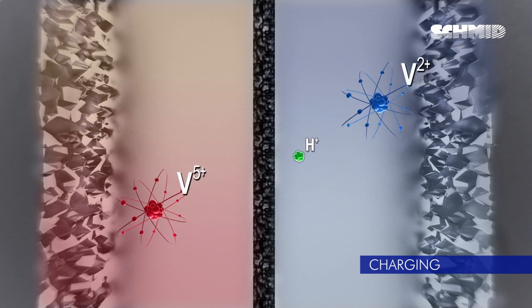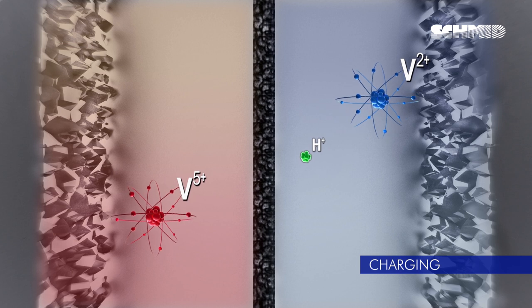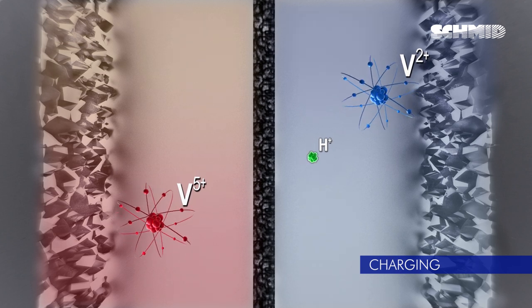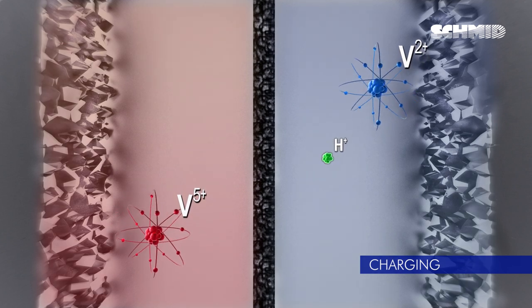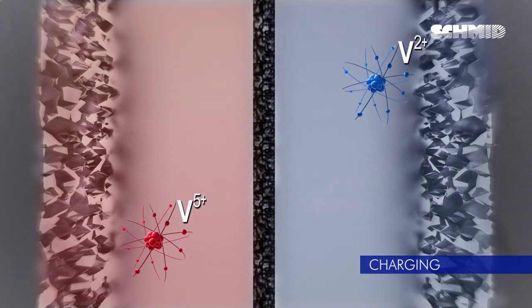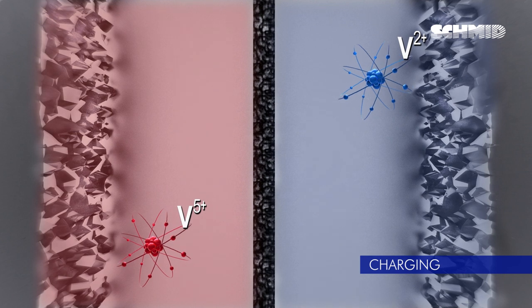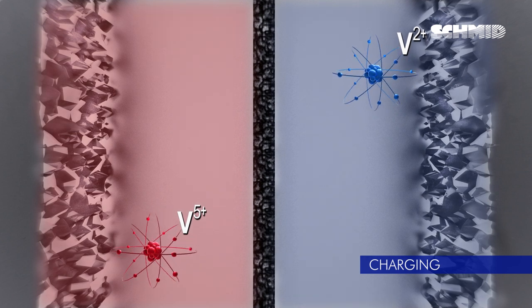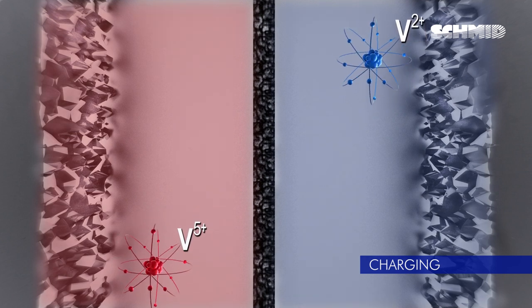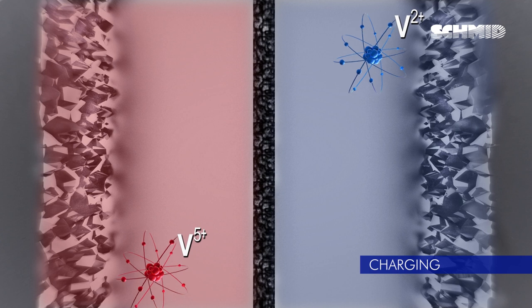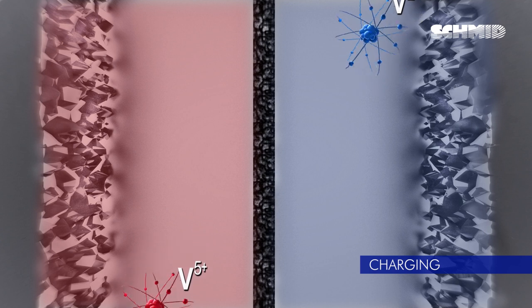The hydronium ion which has passed the membrane balances the overall charge of the half cell. The two electrolytes leave the half cells in a charged state as vanadium 2 and vanadium 5.